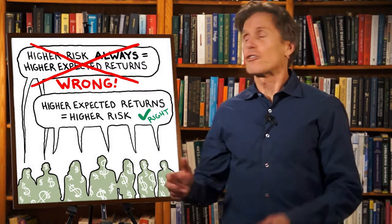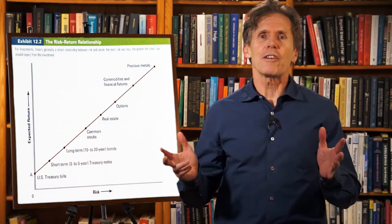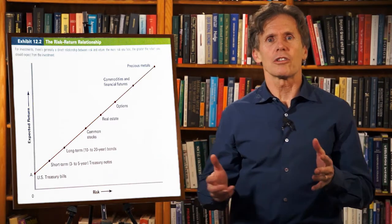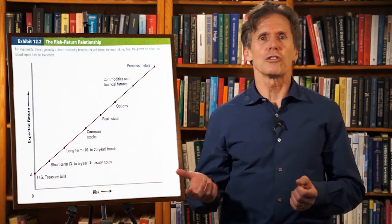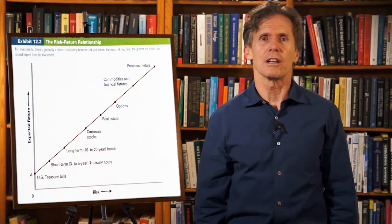I saw this graph in a textbook on personal finance that I was reading. The graph shows the relationship between expected return and risk for US Treasury bills, notes and bonds, common stocks, real estate, options, futures and precious metals.